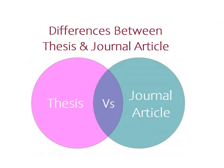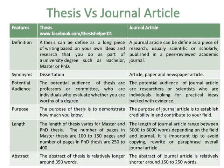Differences between Thesis and Journal Article. A thesis can be defined as a long piece of writing based on your own ideas and research that you do as part of a university degree, such as Bachelor, Master, or PhD. While a journal article can be defined as a piece of research, usually scientific or scholarly, published in a peer-reviewed academic journal.